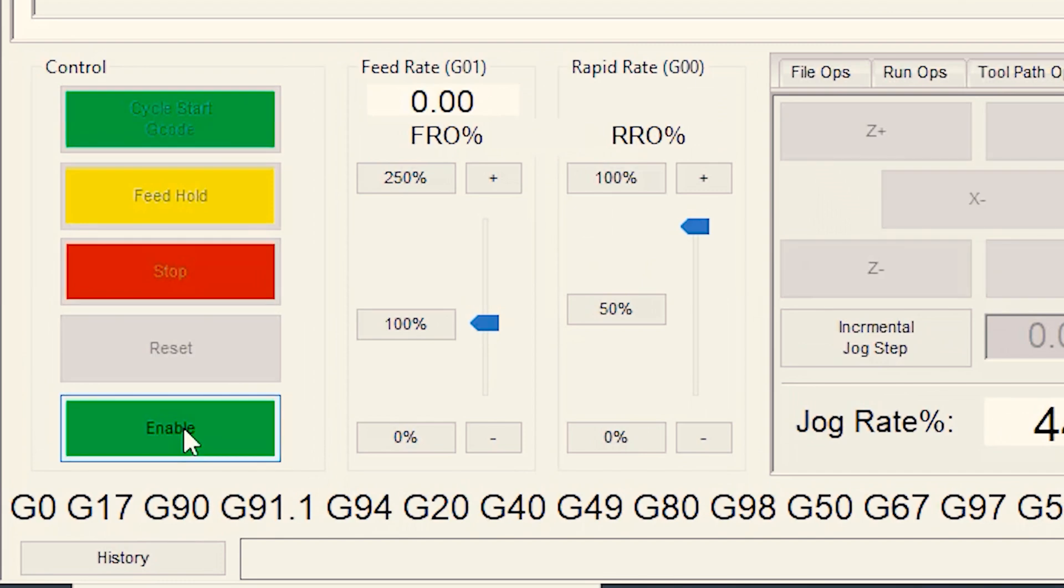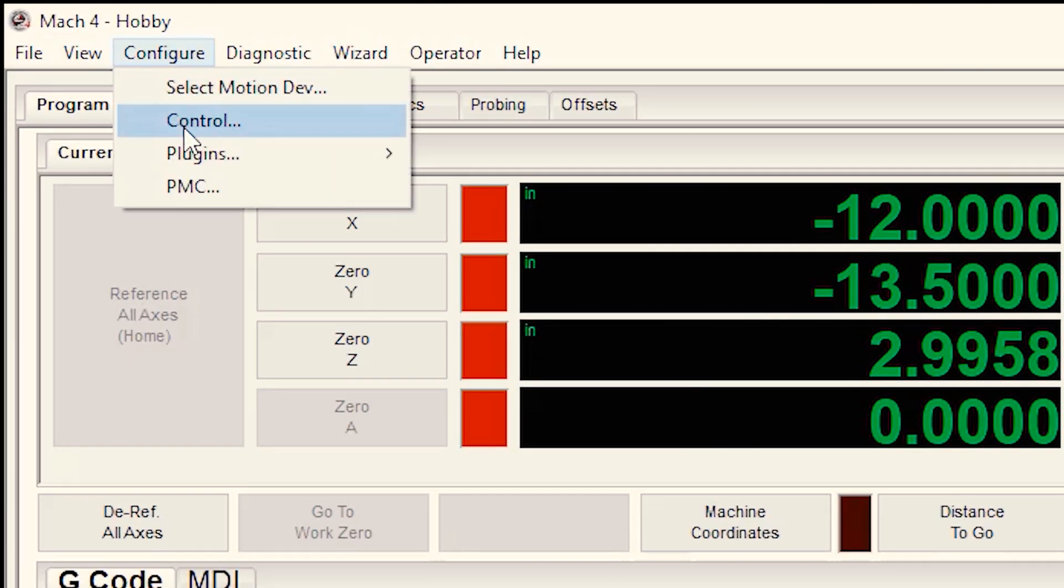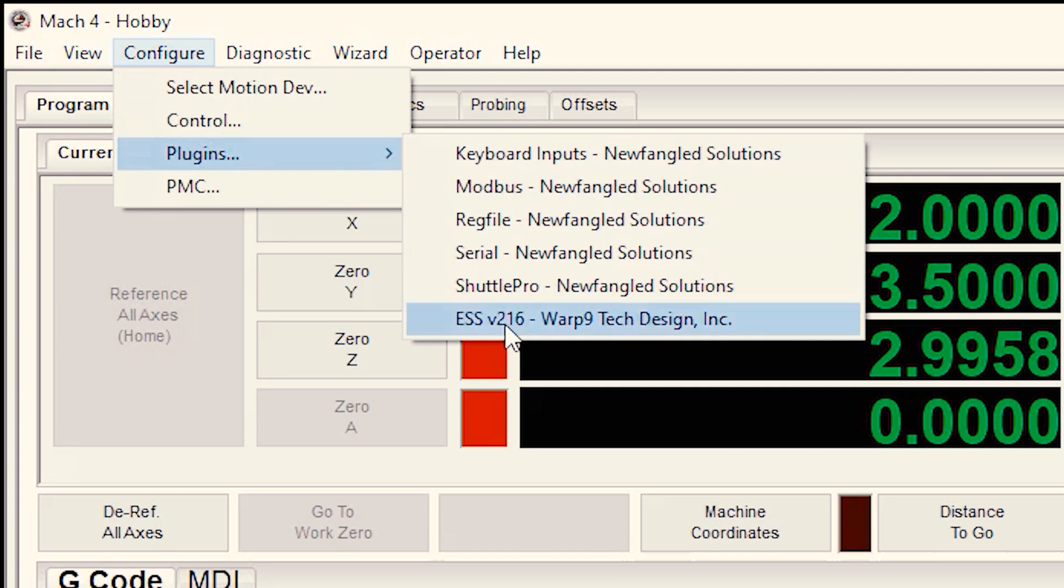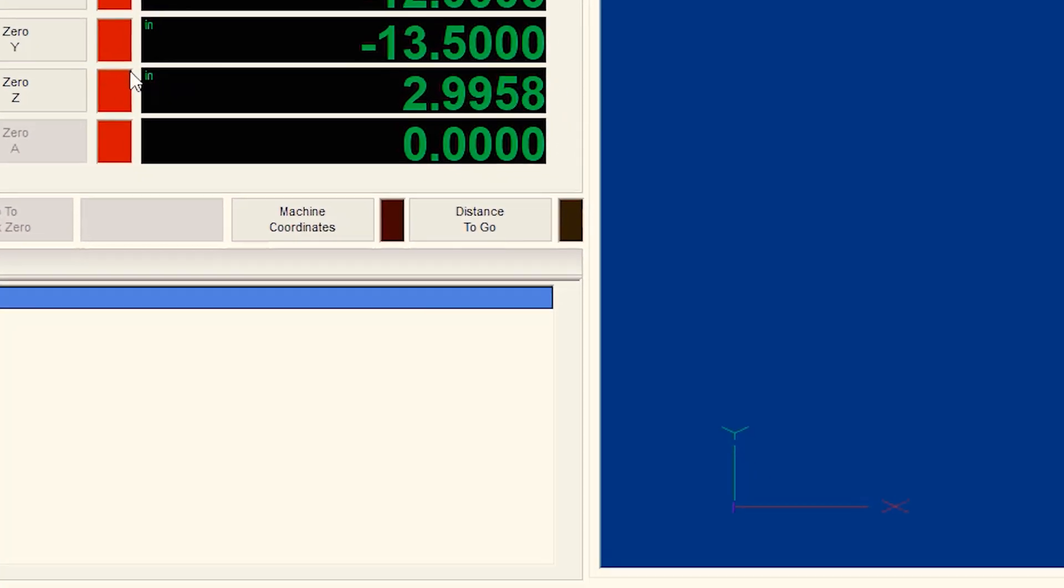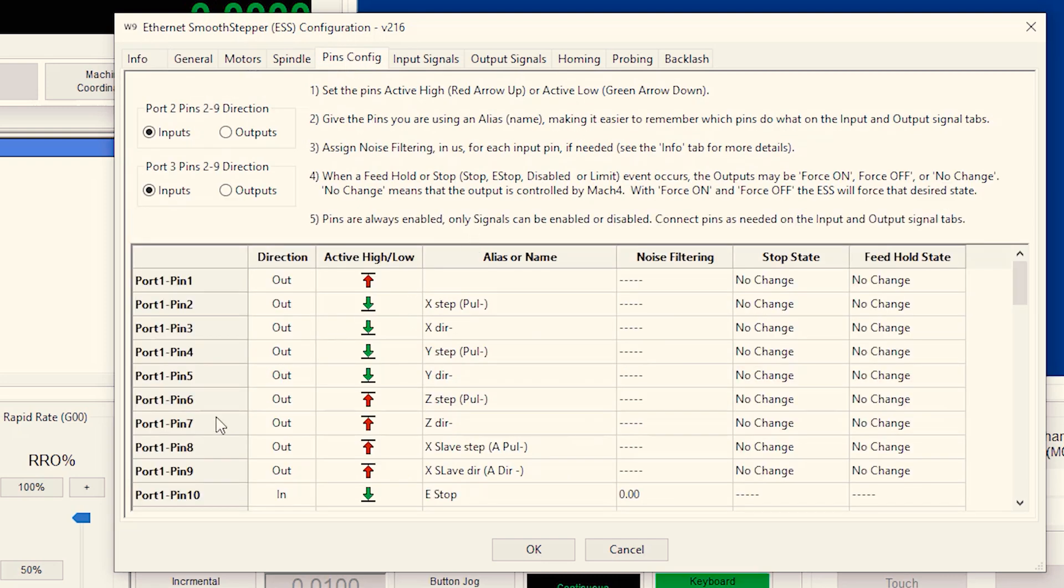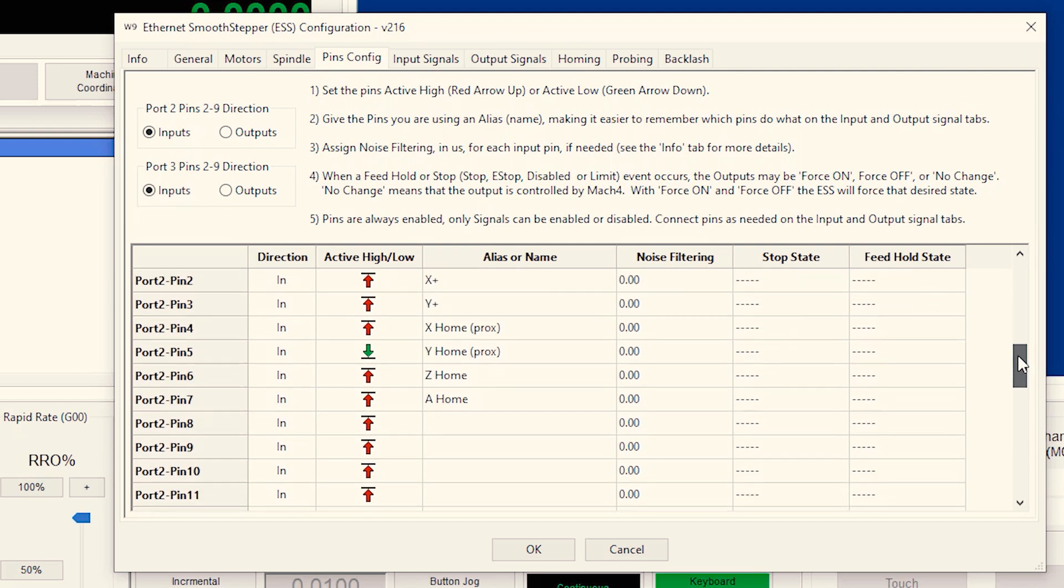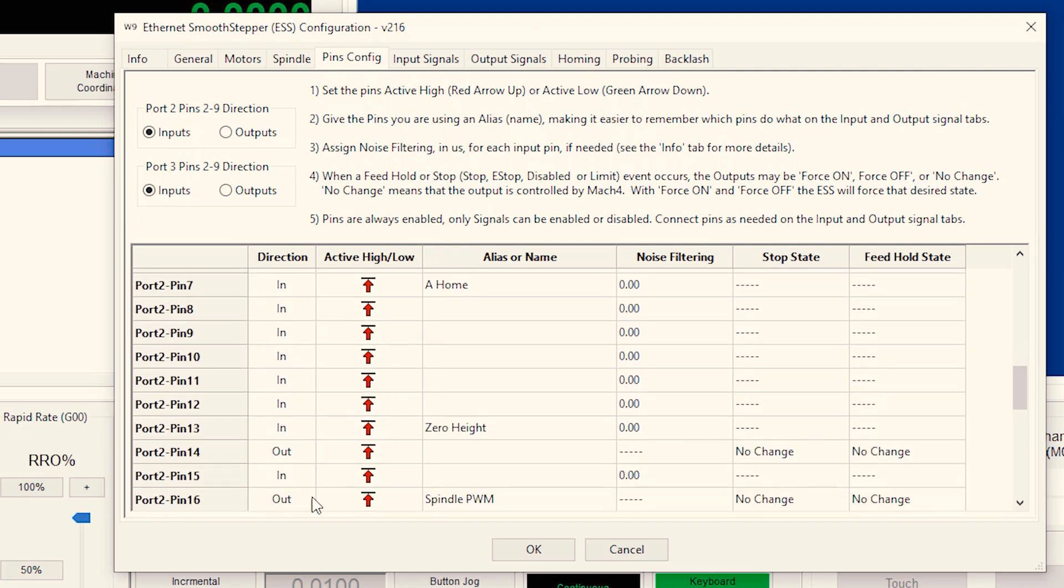In Mach 4, we make sure we're disabled. We go to the configuration, and we go down to the smooth stepper. I configured input pin 13 on port 2. You can use whatever you want, and I named it Zero Height and set it in the active high mode.